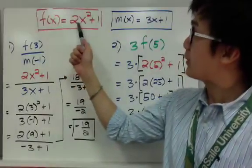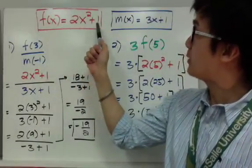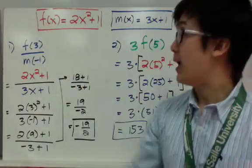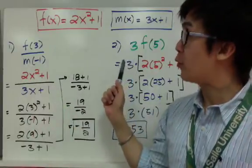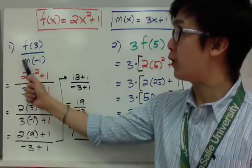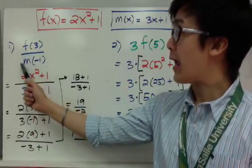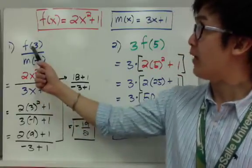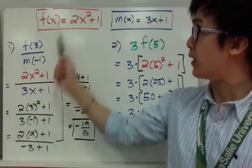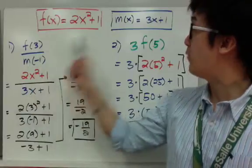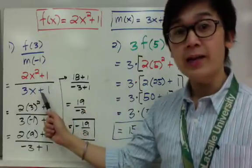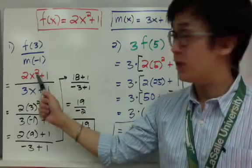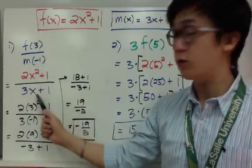I have f of x equal to 2x squared plus 1 and m of x equal to 3x plus 1. In this example, I'm going to divide f of 3 all over m of negative 1. So I'll write f of x, which is 2x squared plus 1, all over m of x, which is 3x plus 1, and then substitute the value of 3 for the numerator and negative 1 for the denominator.